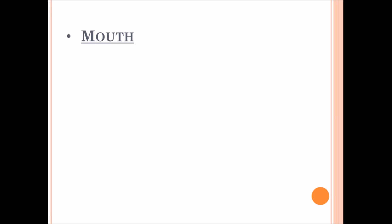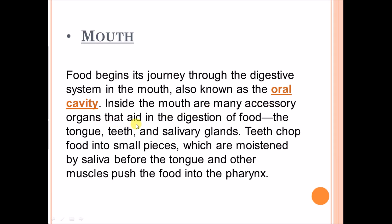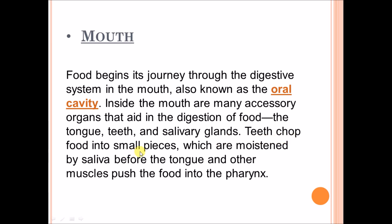The first part of the digestive system is the mouth. Food begins its journey through the digestive system in the mouth, also known as the oral cavity. Inside the mouth are many accessory organs that aid in the digestion of food: the tongue, teeth, and the salivary glands. Teeth chop food into small pieces.